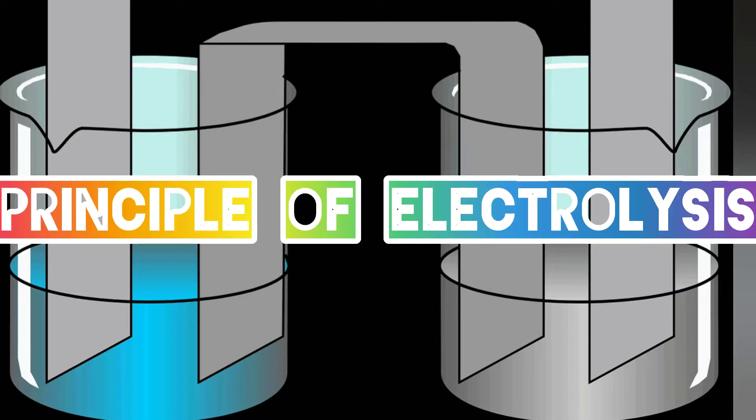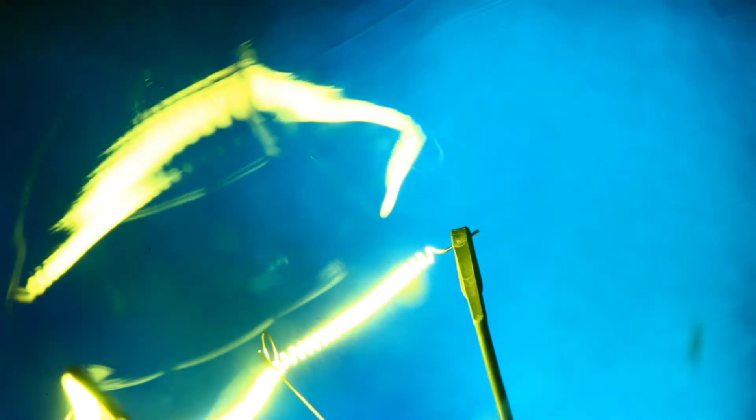The principle of electrolysis — this is what happens when the switch is closed. First, electrons flow from the negative terminal of the battery to the cathode. Second, in the liquid, the ions move to the electrode of opposite charge. Third, at the cathode, the lead ions accept electrons.